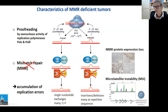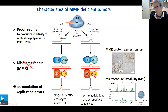The characteristics of mismatch repair deficient cells or tumors are, in most cases, that the proteins are no longer expressed — which can be detected by immunohistochemistry — and that these cells accumulate many mutations, including single nucleotide exchanges (mainly C-to-T), and also small insertions or deletions. These types of mutations occur very frequently at so-called microsatellites — sequences that contain repetitive elements.